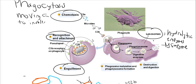These lysosomes fuse with the phagosome to form what's called a phagolysosome. Inside the phagolysosome, all these enzymes come into play and chop the pathogen up into a bunch of little pieces, and then these pieces get expelled by exocytosis. That is how phagocytosis occurs in those steps.